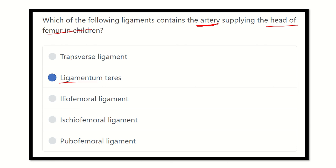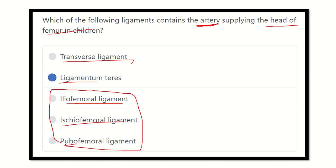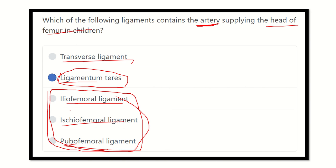The other ligaments — transverse ligament — are not related here. Iliofemoral, ischiofemoral, and pubofemoral ligaments are ligaments of the hip joint, but they attach to the neck area of the femur, not the head. So our final answer is the ligamentum teres, also called the ligament of the head of the femur, which contains the artery to the head.